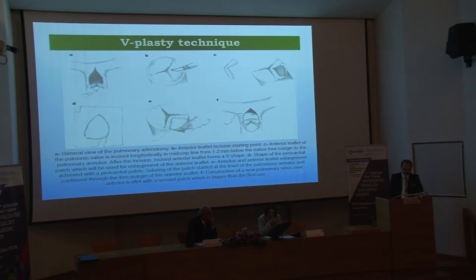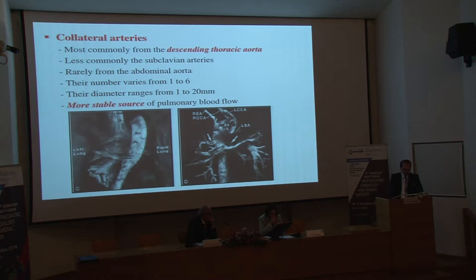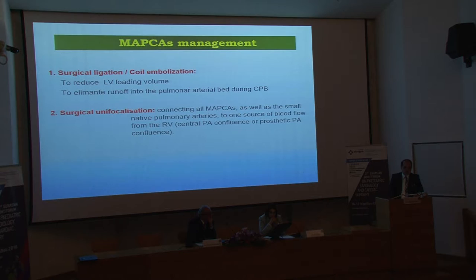Here are the techniques of valve-saving procedures, including autologous pantaloon pericardial patch techniques and the V-plasty technique described by Hashim Stunsoy. Also, during the repair of TOF, we have to deal with the presence of aortopulmonary collaterals. They arise most commonly from the descending aorta and can vary with a diameter of about 1 to 20 millimeters. MAPCAs can be either surgically ligated or embolized and must be considered before CPB. A second option is unifocalization.